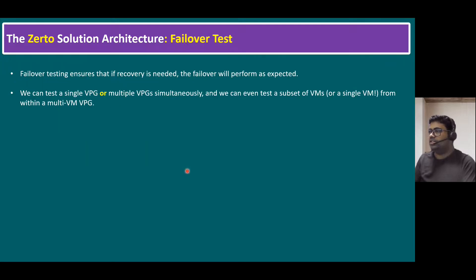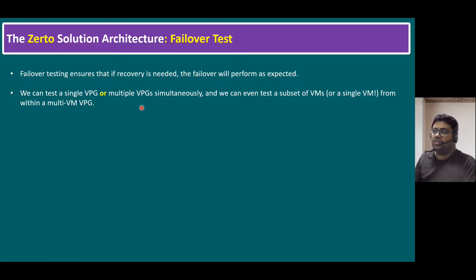Another key point is Zerto's failover test architecture. Failover testing ensures that if recovery is needed, the failover will perform as expected. We can test a single VPG or multiple Virtual Protection Groups simultaneously. We can even test a subset of VMs or a single VM from within a multi-VM protection group.